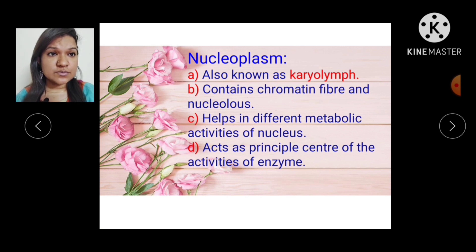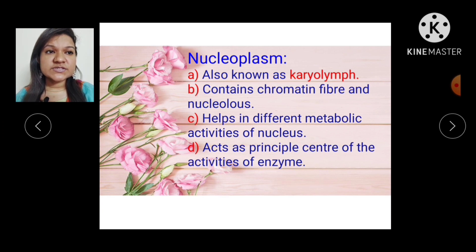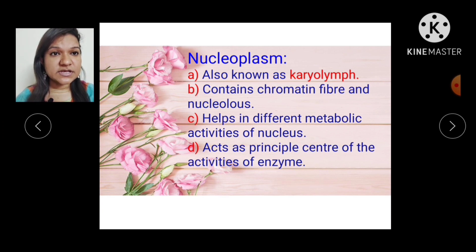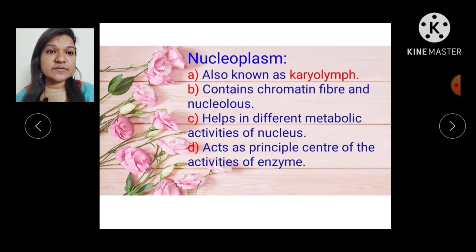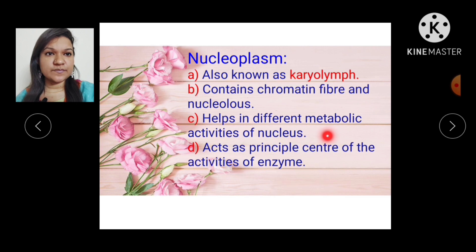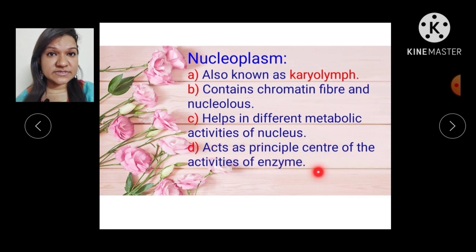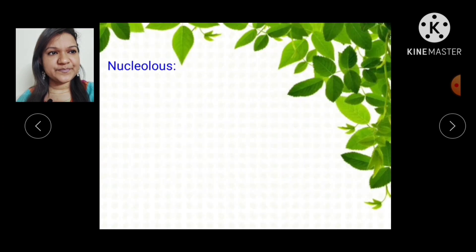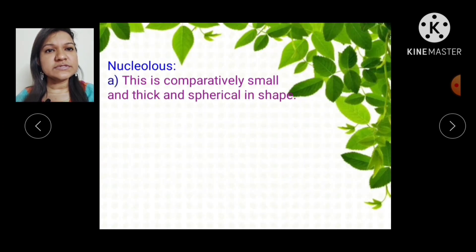Nucleoplasm, also known as karyolymph, contains chromatin fibers and the nucleolus. It helps in different metabolic activities of the nucleus and acts as the principal center of enzyme activities.